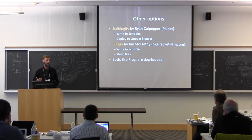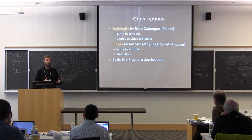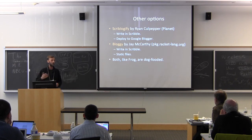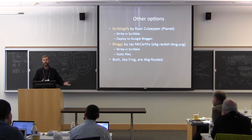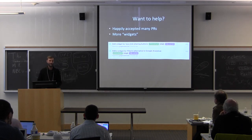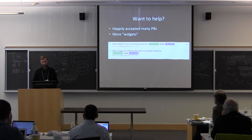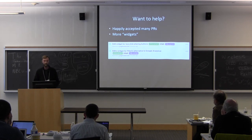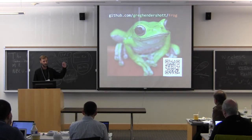There are a couple of options in the Racket world for blogging. One is Scriblogify by Ryan Culpepper — if you want to write blog posts in Scribble and deploy to Google Blogger, it's a very smooth experience. Another is Bloggy by Jay McCarthy, focused on writing posts in Scribble and deploying to a static website. I think all three of these systems are dog-fooded, meaning all three of us use them for our own blogs. If you'd like to help with Frog — other than the Markdown parser — there are some low-hanging-fruit items on the GitHub repo. I've gotten some pull requests and I'm happy to accept them. If you want to create a widget for some web service that's not supported, that's a pretty easy thing to do. Thank you very much.